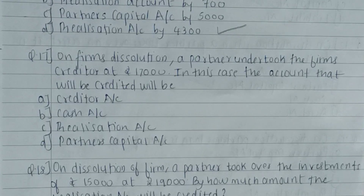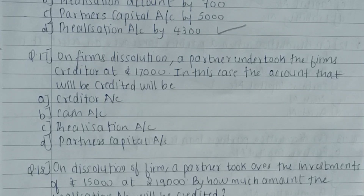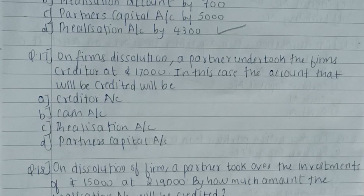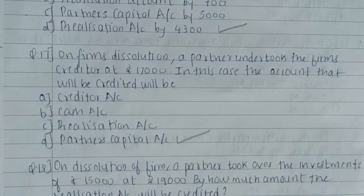Seventeenth question: on firm's dissolution, a partner undertook the firm's creditors at Rs. 17,000. To which account will the amount be credited? When a partner takes over a liability, it is recorded on the debit side of the realization account. The opposite entry — the credit — goes to the partner's capital account. Therefore the correct answer is D — partner's capital account.